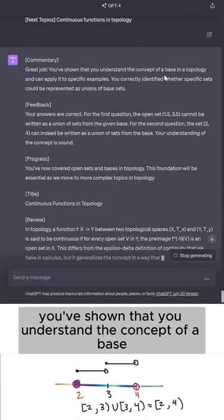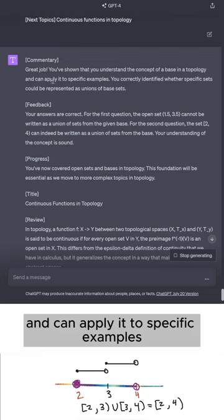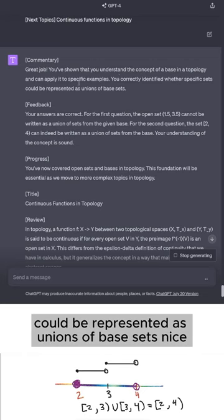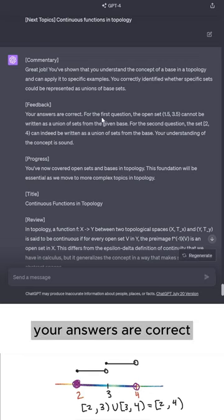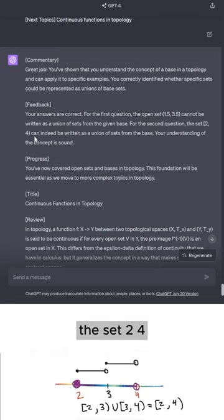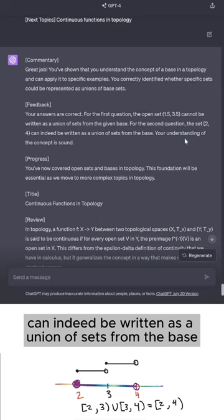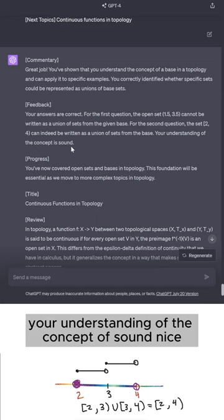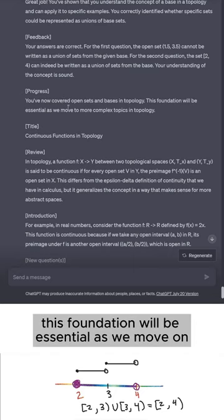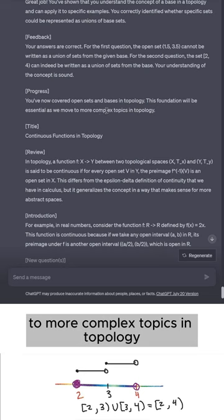Great job. You've shown that you understand the concept of a base in a topology and can apply it to specific examples. You correctly identified whether specific sets could be represented as unions of base sets. Nice. Your answers are correct. For the first question, the open set (1.5, 3.5) cannot be written as a union of sets from the given base. For the second question, the set (2,4) can indeed be written as a union of sets from the base. Your understanding of the concept is sound. Nice. You've now covered open sets and bases in topology. This foundation will be essential as we move on to more complex topics in topology.